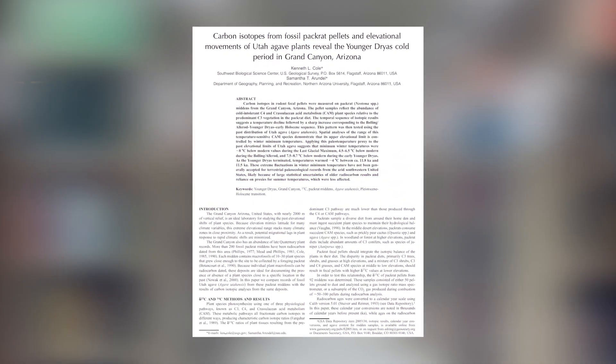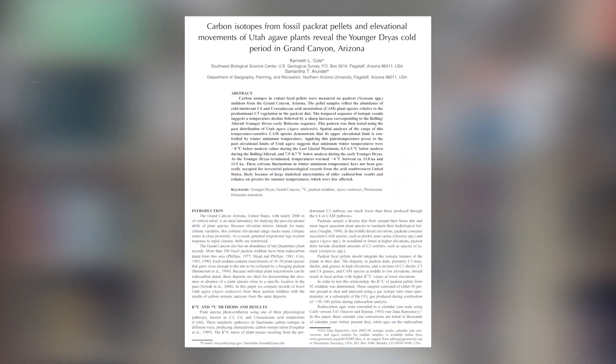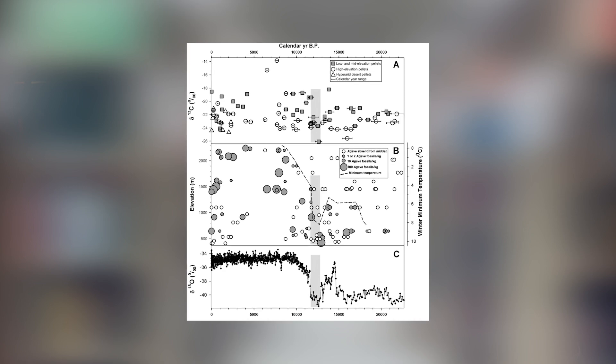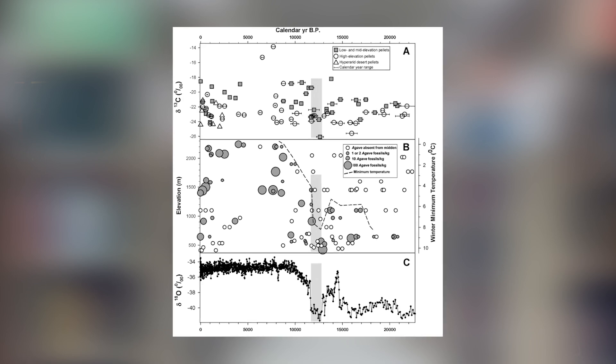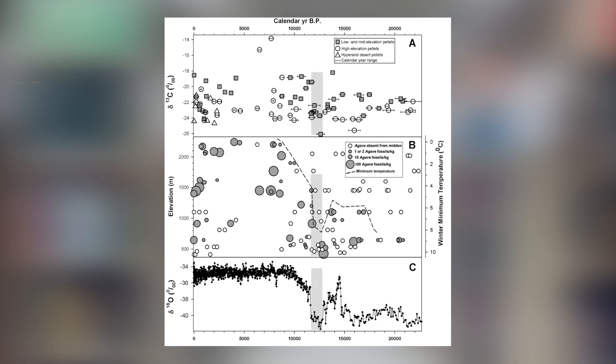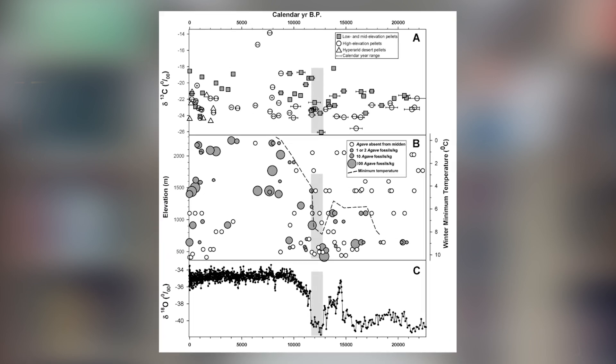Before the Younger Dryas event here in the desert southwest, minimum winter temperatures were something like 15 degrees Fahrenheit cooler than they are today. Researchers studying fossilized pack rat droppings found in the Grand Canyon — pack rats being rodents that eat almost any plants around but love to eat agave utahensis where available — found they can trace historic climate changes based on where agave utahensis remains appear in those fossilized droppings and when they were made.